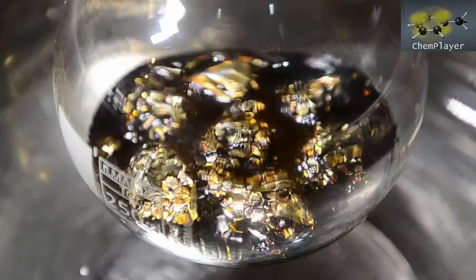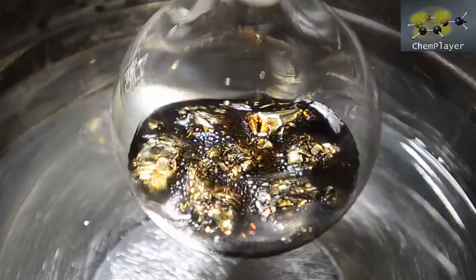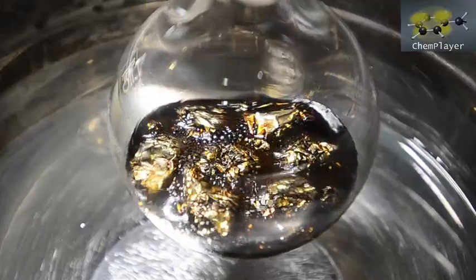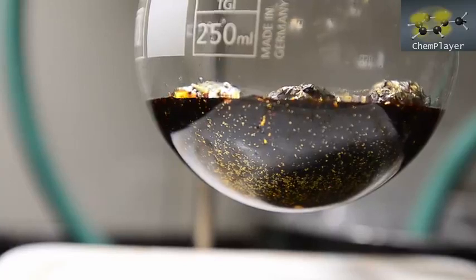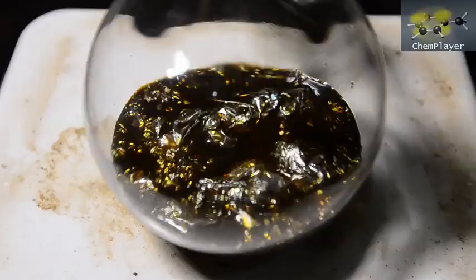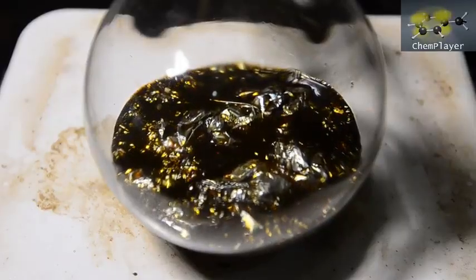We left the aluminum foil react for another 30 minutes. You could start to see specks of metal floating around in the mixture, and the aluminum was definitely dissolving and forming a more yellow colored reaction mixture.